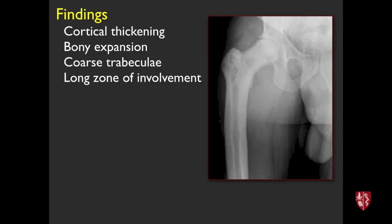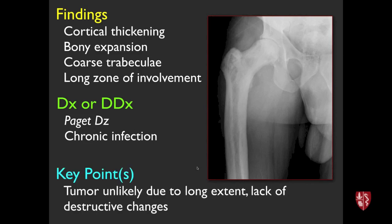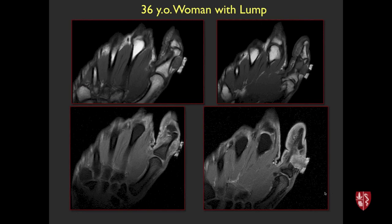65-year-old man, right hip pain. We're seeing a lot of cortical thickening along the femur — very thick cortex, overall expansion, coarse trabeculae, and a long zone of involvement involving almost all the bone shown. There aren't too many things that will do that — this is Paget disease. A chronic infection could potentially look similar. A tumor is unlikely given the extremely long extent of involvement. There's also no destructive change that would suggest a definitely aggressive lesion.